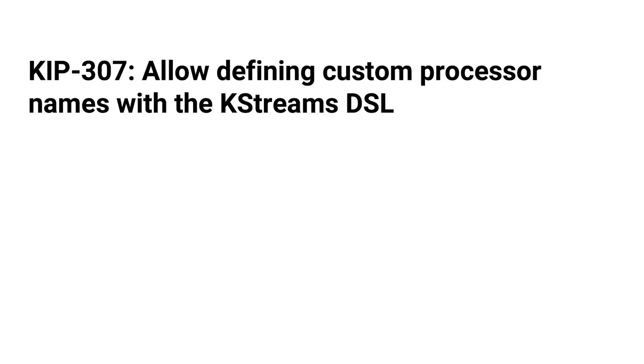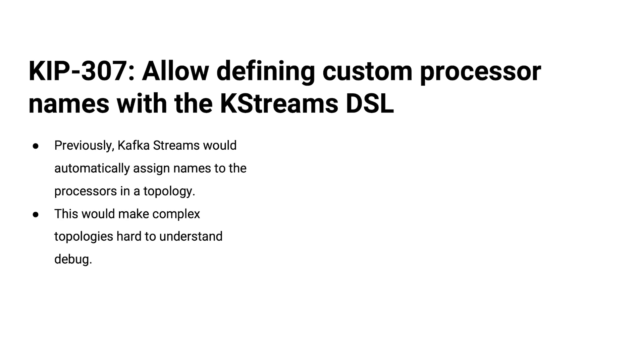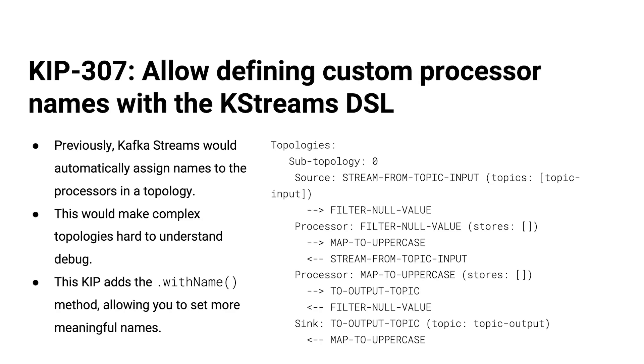KIP 307: allow defining custom processor names with the KStreams DSL. When you're creating a complex topology, various processors get created along the way. Anytime you do an operation that creates a new processor node in the graph, that thing gets a name — and those names are not friendly. Sometimes they have just long numbers, like a 10-digit suffix with some oblique prefix. You'd dump a text serialization of the topology out, and there are nice tools online to render those as graphs, so it's a solvable problem. But you might want to give those things a friendly name. This KIP adds the withName method — anytime you create a new processor, just call dot withName and give it a friendly name. It can make big topologies a lot easier to debug.